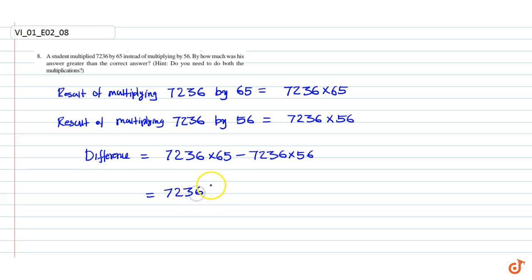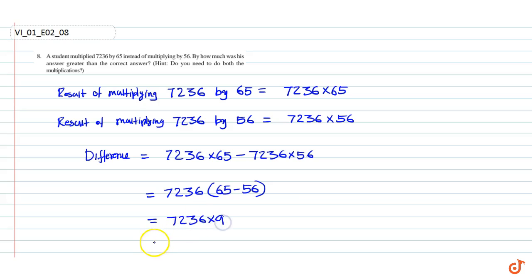This is equal to 7236 × (65 − 56), which is equal to 7236 × 9.